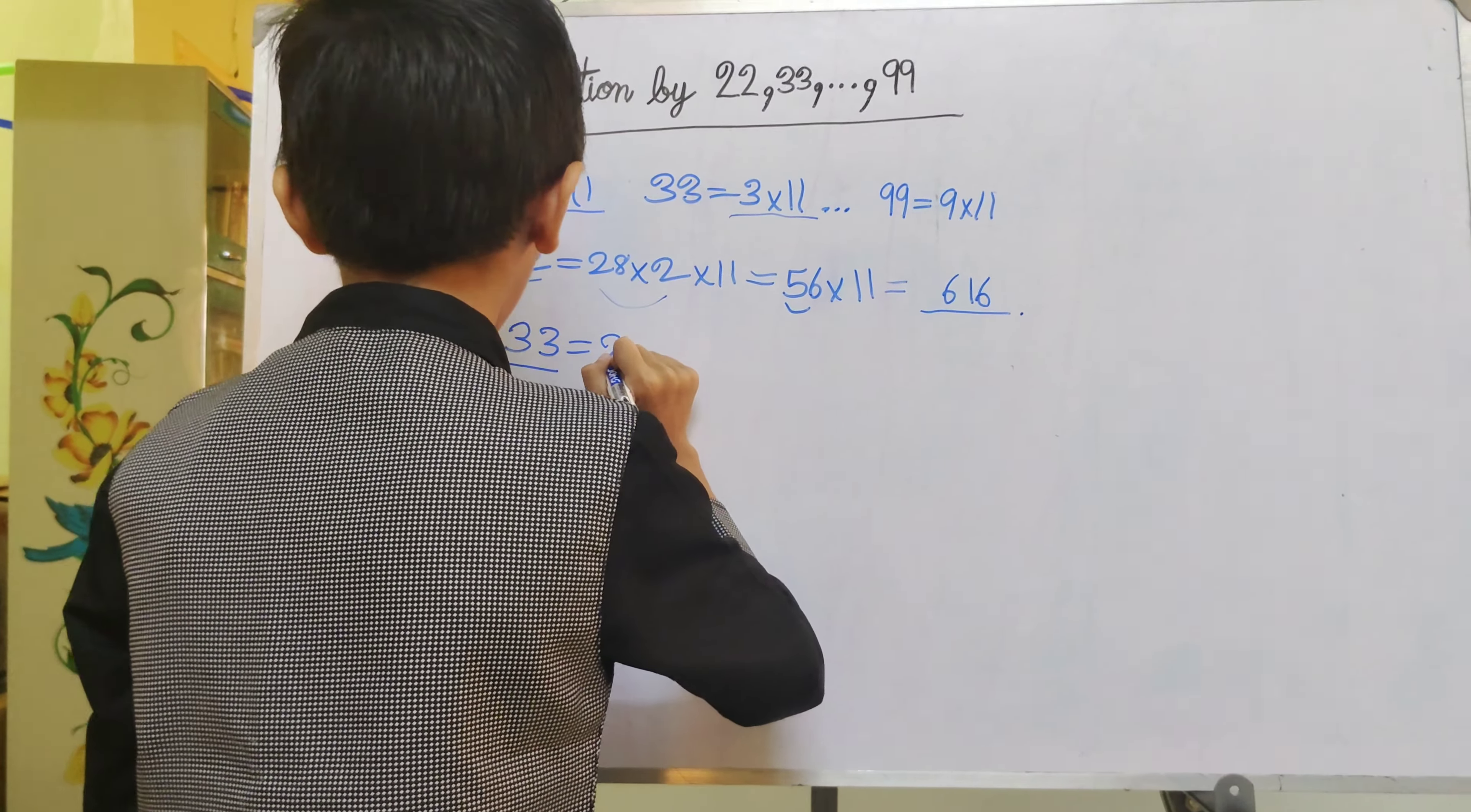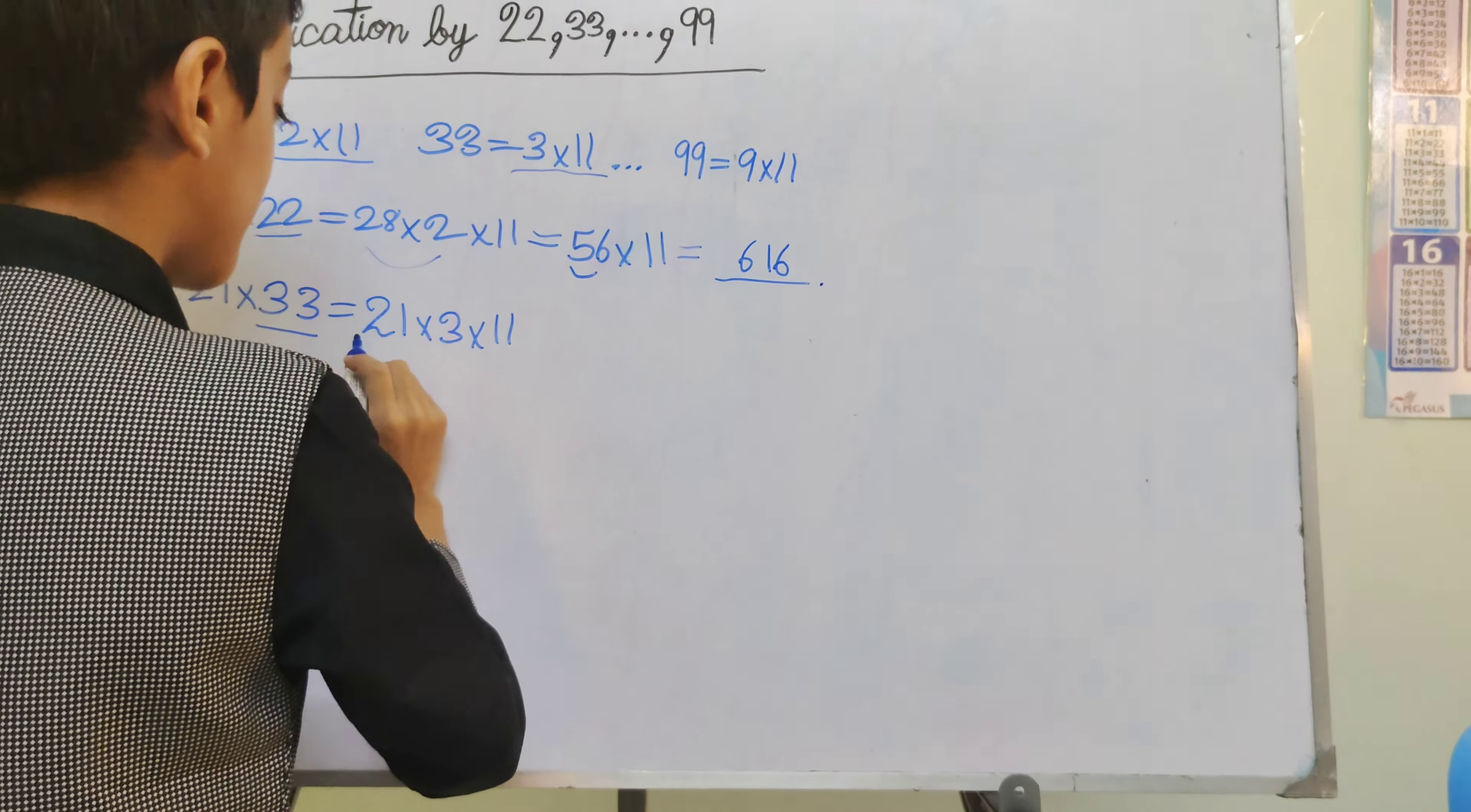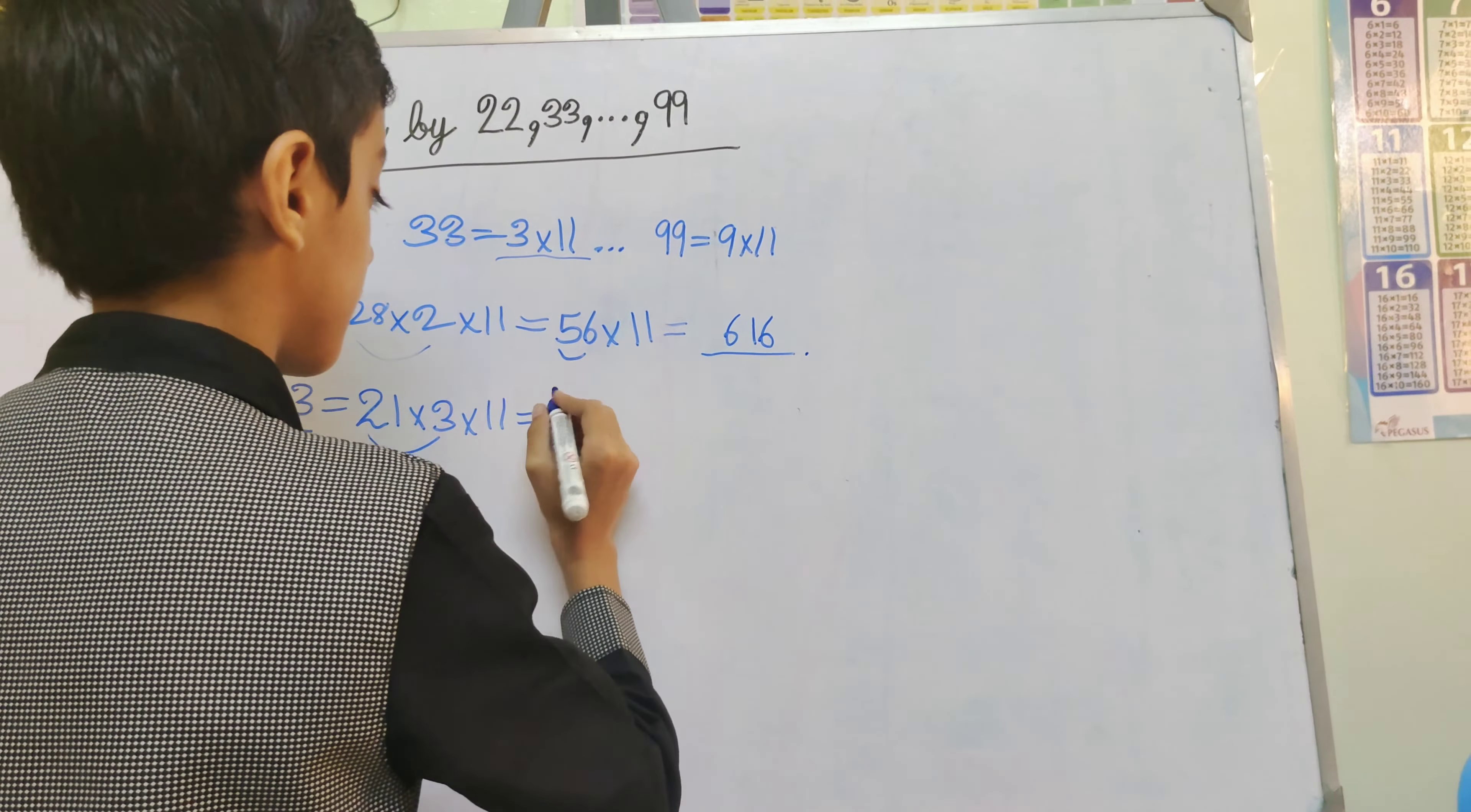Equal to 21 multiply 3. First, we will multiply 21 and 3. So, 2 and 3 is 6, 1 and 3 is 3, which gives us 63.